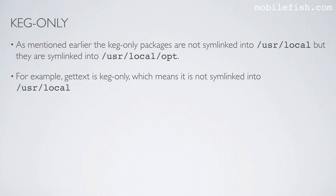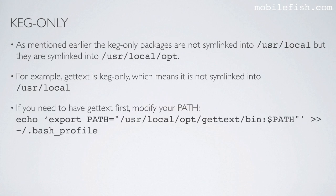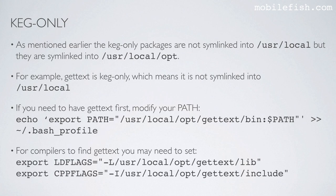For example, the package gettext is keg-only, which means it is not symlinked into this path. If you need to have gettext first, modify your PATH as demonstrated here. The PATH is modified in the bash profile. For compilers to find gettext, you may need to set these export commands.